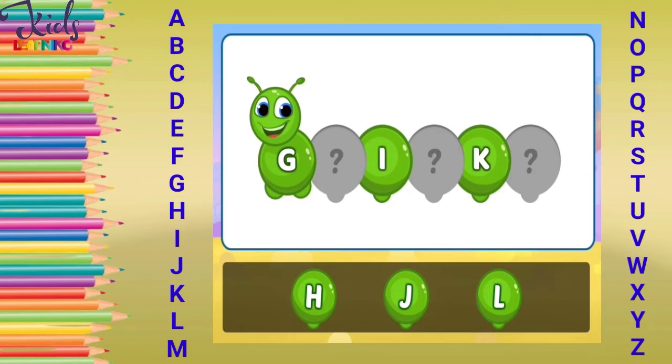Now find another missing letter. What comes after G? It's H, J and L. Tell me what comes after G? Yes, it's H.